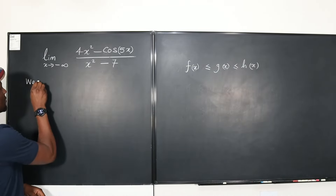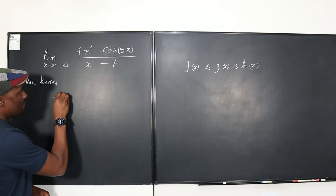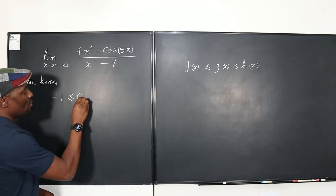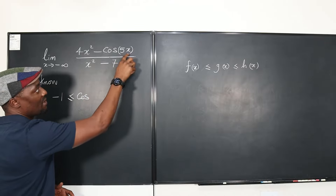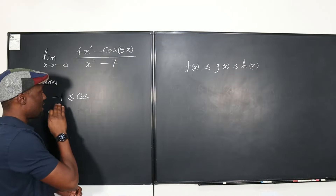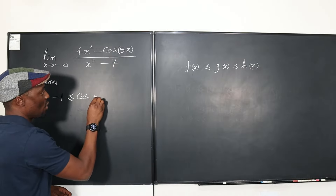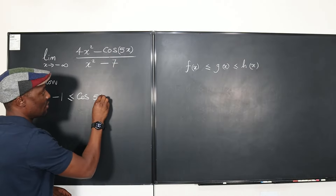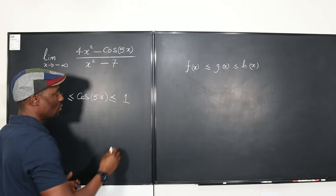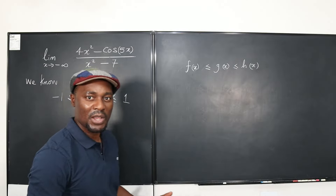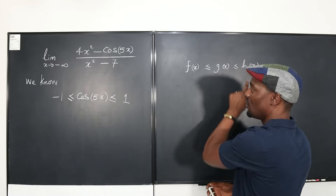We know that negative 1 is always less than or equal to the cosine of any angle — it doesn't matter what the argument is. So we write: negative 1 ≤ cos(5x) ≤ positive 1. That's the expression that's going to help us here.